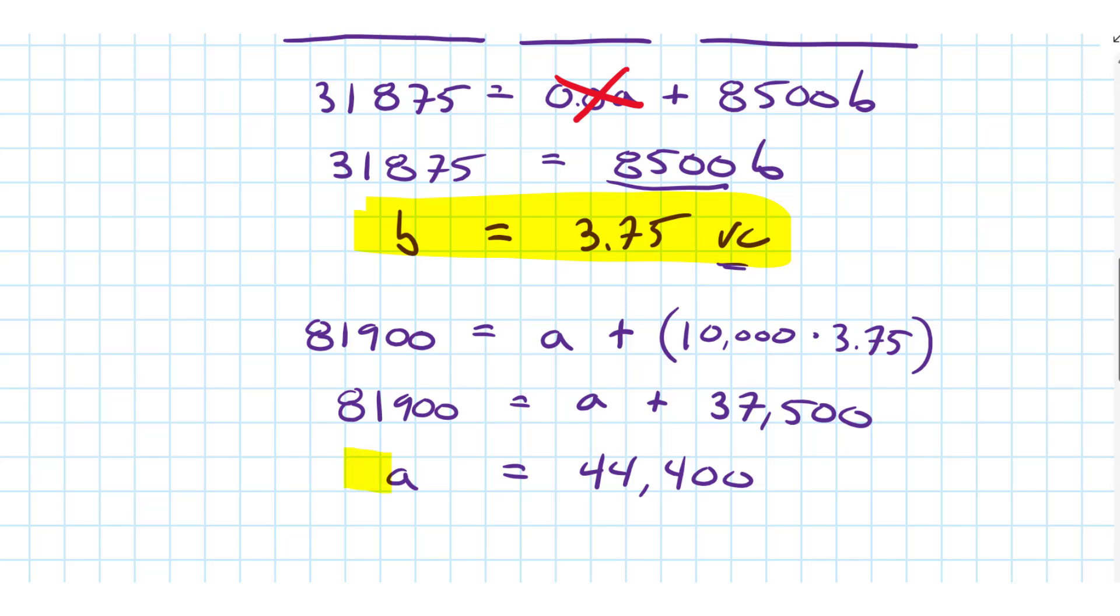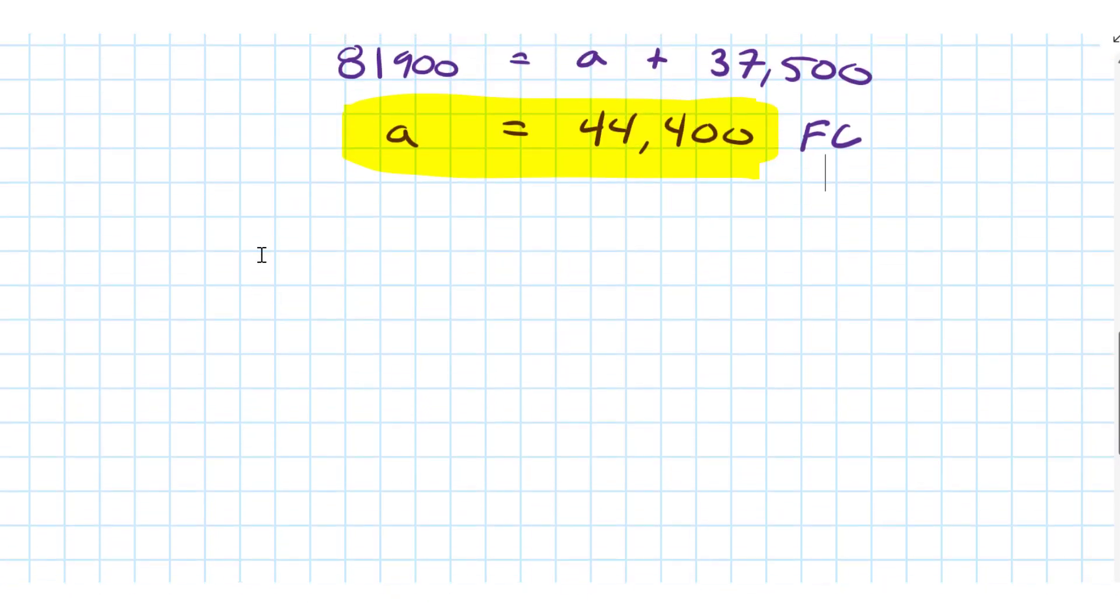So we're getting really close to getting a total cost for 16,000 units. We've got a variable cost, we've got a fixed cost. With that information we can now move to the final step, the total cost for 16,000 units.